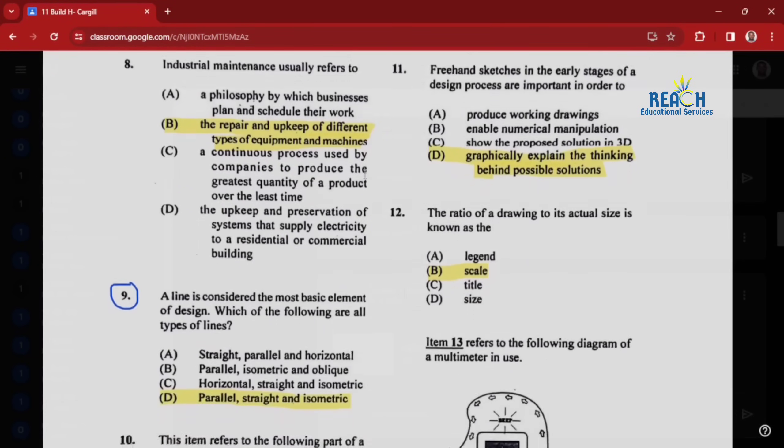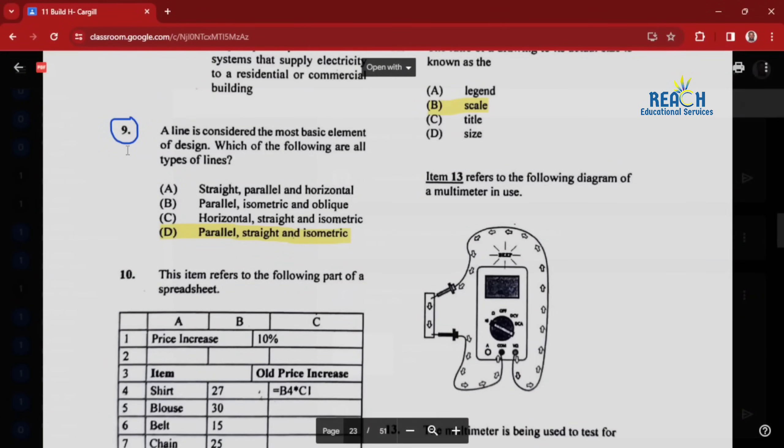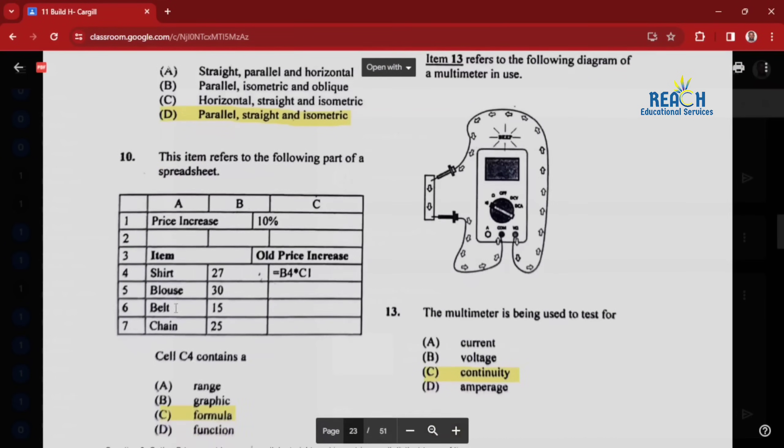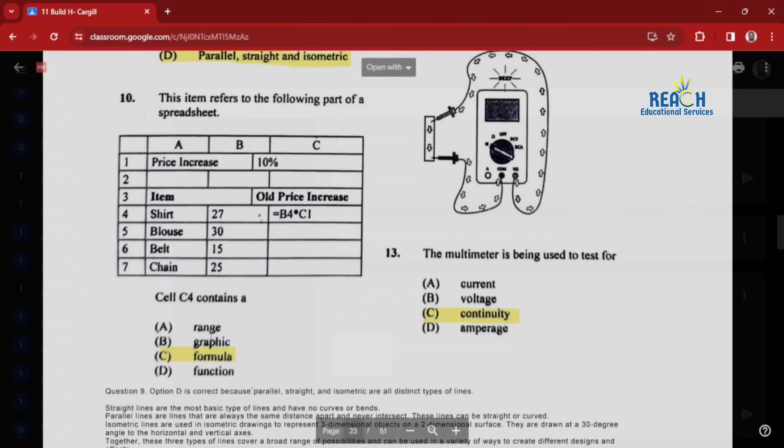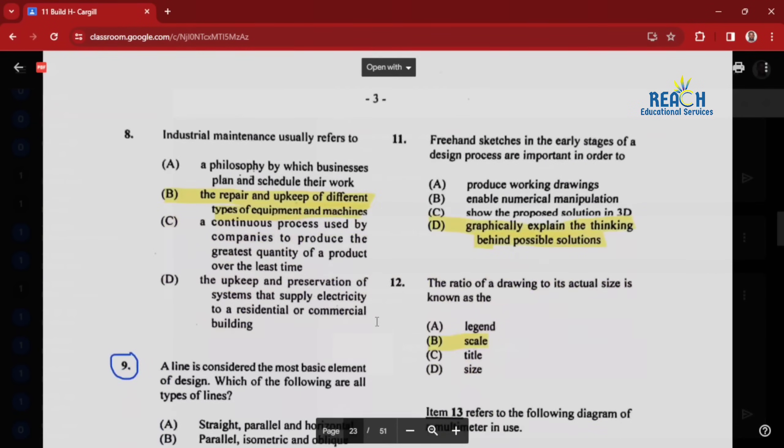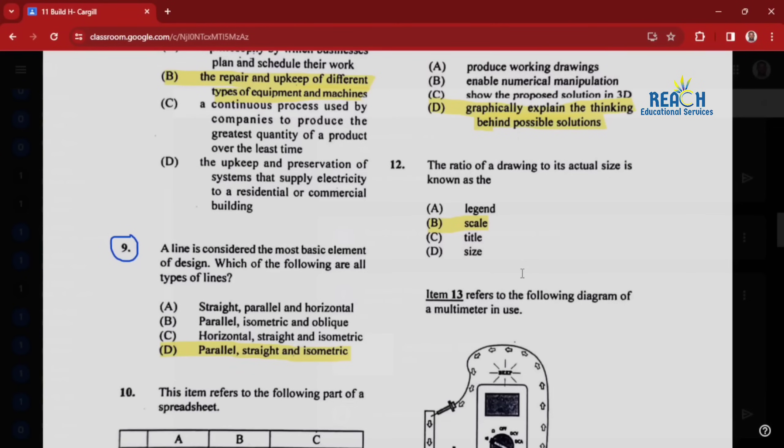Question nine: a line is considered the most basic element of design. Which of the following are all types of lines? It is all - parallel, straight, and isometric. Question ten: the item refers to the following part of a spreadsheet. Cell C4 contains a formula. Question eleven: freehand sketches in the early stages of a design process are important in order to graphically explain the thinking behind possible solutions. Question twelve: the ratio of a drawing to its actual size is known as the scale.